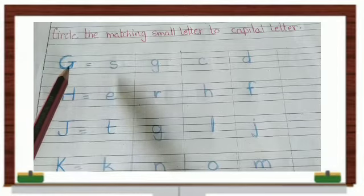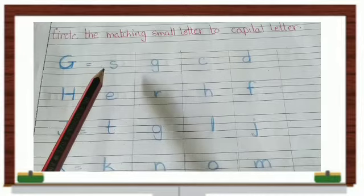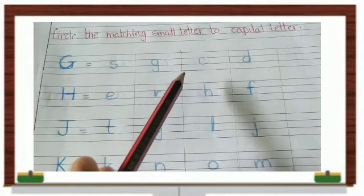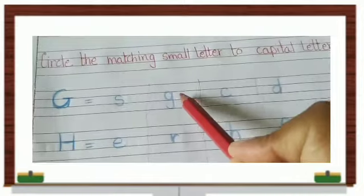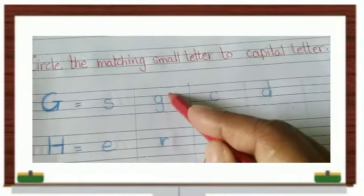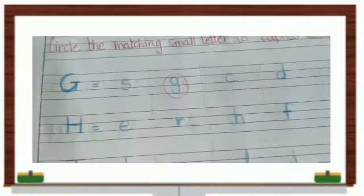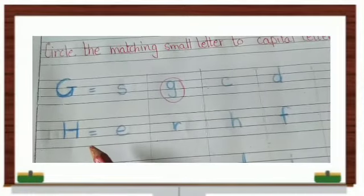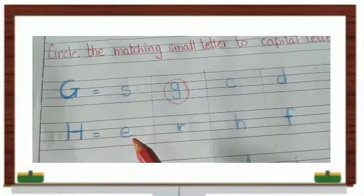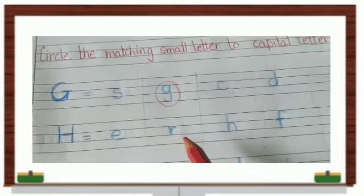You're given this — the letter G. We will match which is the small letter G. This is small letter G, so they will circle small letter G. Next, this is which letter — H. Where is small letter H?